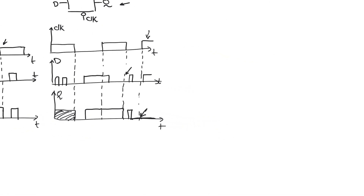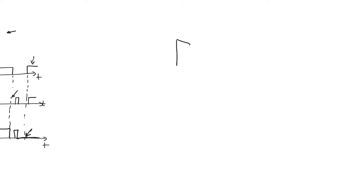Now let's look at how a latch is designed or made. The main architecture used to create a latch is the multiplexer-based architecture. Imagine that we have a multiplexer whose select line is the clock signal. Q will either be the one input when the clock is one, or the zero input when the clock is zero. If we attach D to the one input, this is obviously an active high latch because Q will be equal to D when the clock is equal to one.